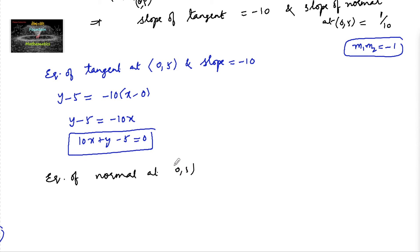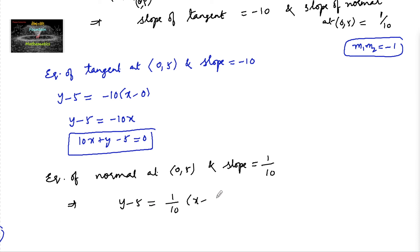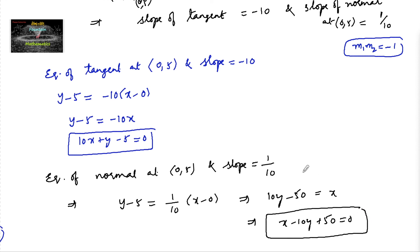The equation of the normal at (0, 5) with slope 1/10: y - y₁ = (1/10)(x - x₁), giving 10(y - 5) = x, or x - 10y + 50 = 0. This is the equation of the normal to the curve at point (0, 5).